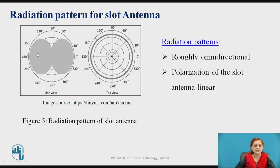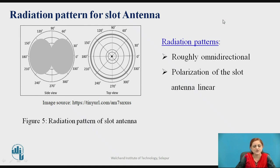This is the radiation pattern for the slot antenna given in side view and top view. The radiation pattern for the slot antenna is roughly omnidirectional. The polarization of the slot antenna is linear. Observing the top view, it has an omnidirectional pattern. Comparing the slot antenna and the dipole antenna, these two are complements to each other — not exactly in practice, but their parameters and characteristics are similar to each other.